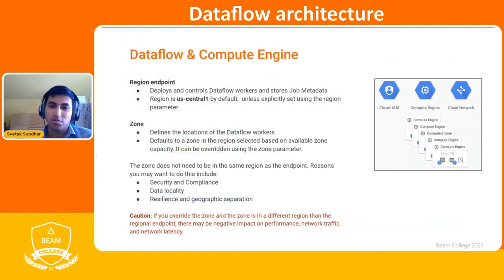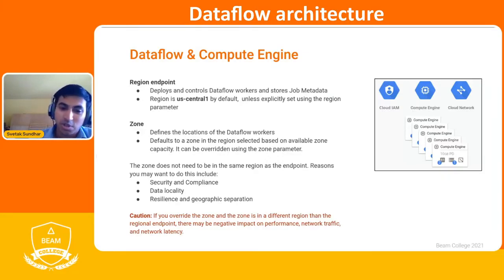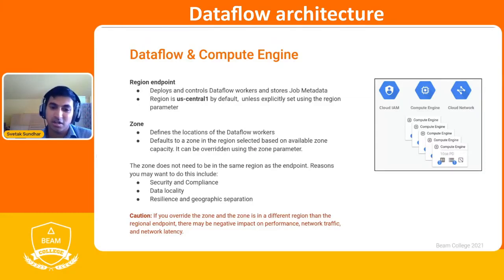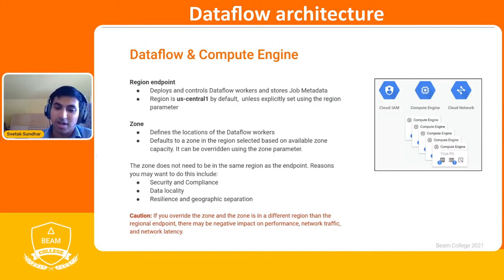Regional endpoints map to the primary worker — they don't do the work but provision it. The region defaults to US Central 1, but you can override this. Zones correspond to your secondary Dataflow workers, which are the Compute Engine VMs carrying out the work. The zone defines the location of the Dataflow workers and defaults to a zone based in the selected region. You might want to override this for reasons like data locality or geographic separation, but keep in mind that if your primary worker is in one region and secondary workers are in a zone outside that region, there could be network latency delays.